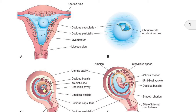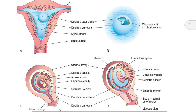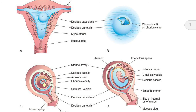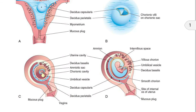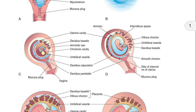Before I start, I would like to give you a glimpse of this presentation. Last time we studied the topic of placenta — how the placenta is formed. In that lecture we studied that at the third month, the maternal part, that is the decidua, and in the fetal part the chorionic villi are taking part in the formation of the placenta.